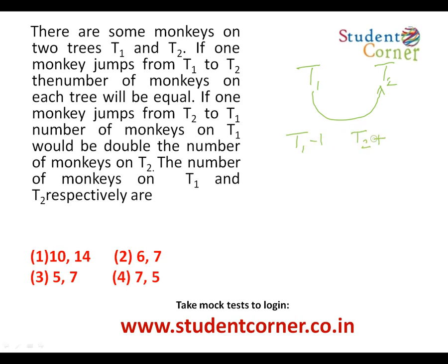After the jump, the number of monkeys on each tree is equal — this is equation one. Now for the second condition: if one monkey jumps from T2 to T1, T1 gains one monkey and T2 loses one monkey.